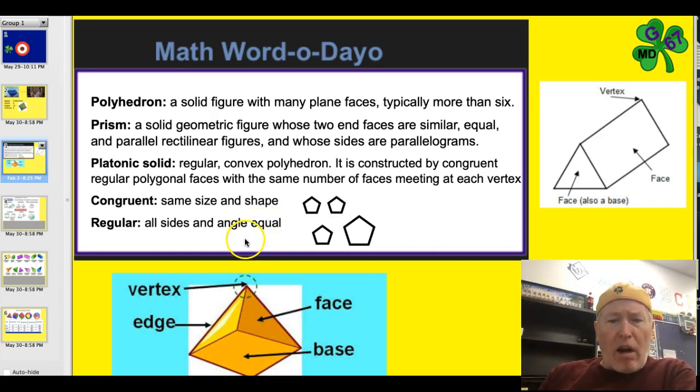Regular. All sides and angles are equal. So notice that these two here are both regular pentagons. Yes, all the sides and the angles on this one are the same, and all the sides and angles on this one are the same. But they're not congruent. But they are regular. So make sure you understand regular and congruent.